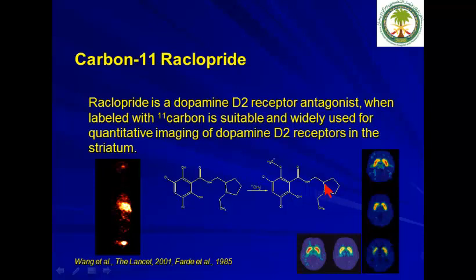C11-raclopride is a dopamine D2 receptor antagonist used for quantification of dopamine D2 receptors. All production methods for C11 are almost similar, and yield is not a major factor since it is used in a single dose and transportation to other centers is very limited.